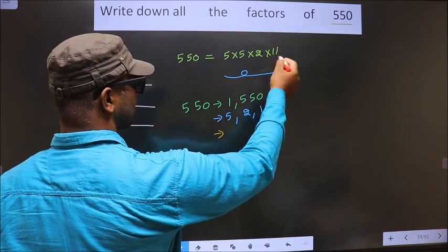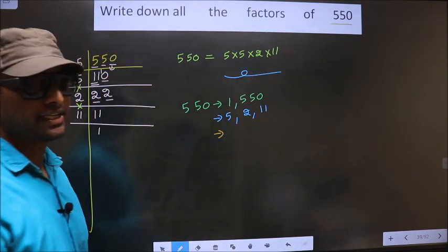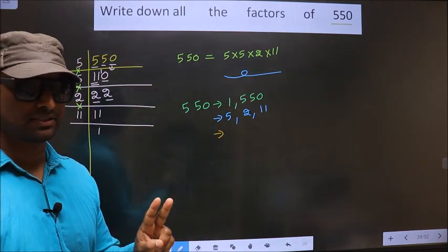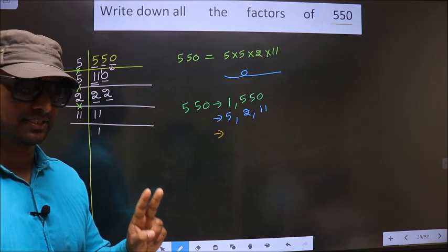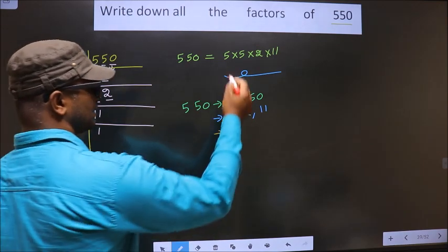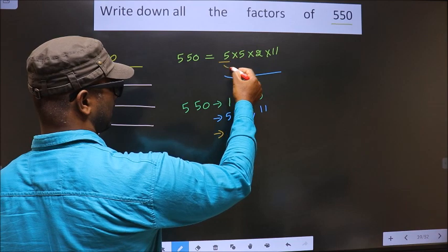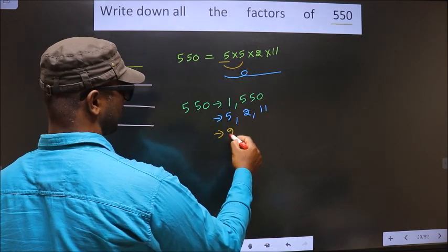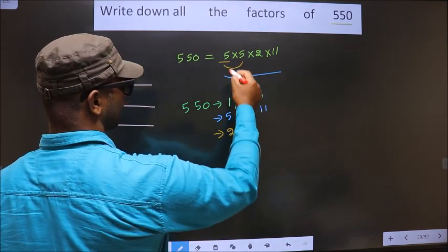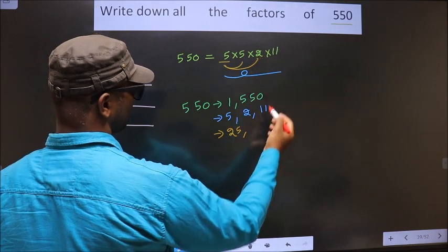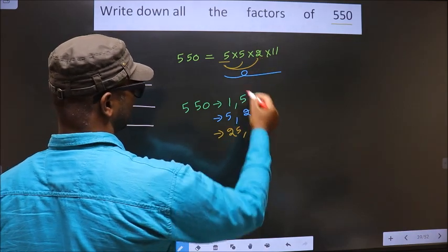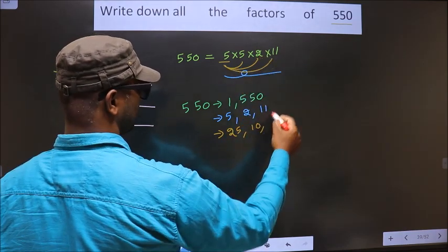Now from these numbers, you take a combination of 2 numbers. First I fix 5, I combine with 5. 5 into 5 is 25. Now I combine with 2, 5 into 2 is 10. Now I combine with 11, 5 into 11 is 55.